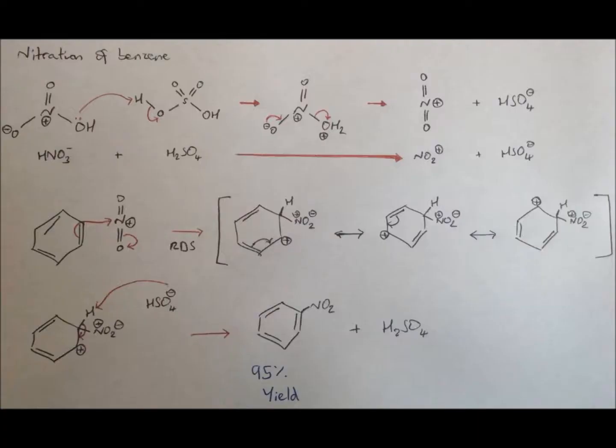Firstly, look at this diagram. In the first line, I have shown how we produce the NO2 needed for the nitration reaction. In the second line of working, I have shown the carbocation intermediates, and in the final line, the product of this reaction. With benzene, we would expect nitration to give a 95% yield.